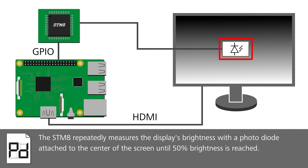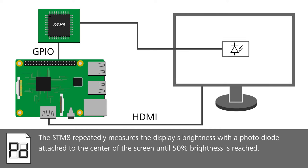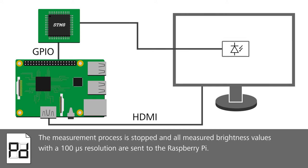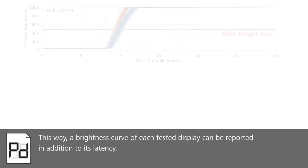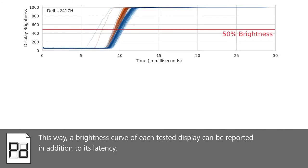The STM8 repeatedly measures the display's brightness with a photodiode attached to the center of the screen until 50% brightness is reached. The measurement process is stopped and all measured brightness values with a 100 µs resolution are sent to the Raspberry Pi. This way, a brightness curve of each tested display can be reported in addition to its latency.